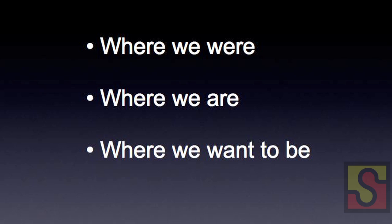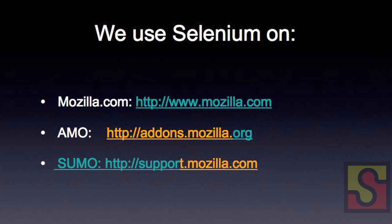The three things we'll talk about primarily are where we were, where we are today, and where we'd like to be in the future. There are three main projects that we have here at Mozilla. We have any number of projects at any given time, but these are the three concurrent projects that we always have cycles for.